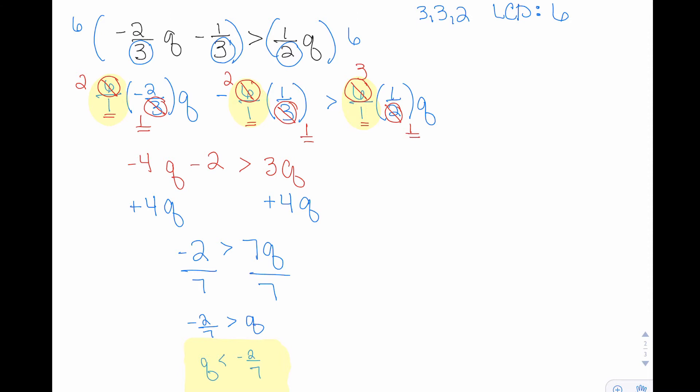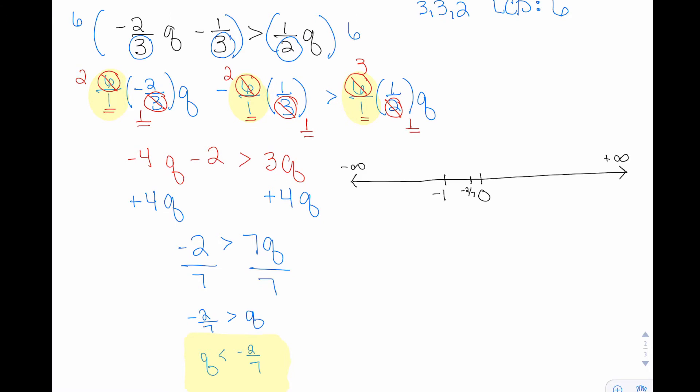Now we're going to show the solution in graphical form and interval notation. Before I graph this one, I want to pay attention to the inequality symbol. We've got that Q is less than negative two over seven.